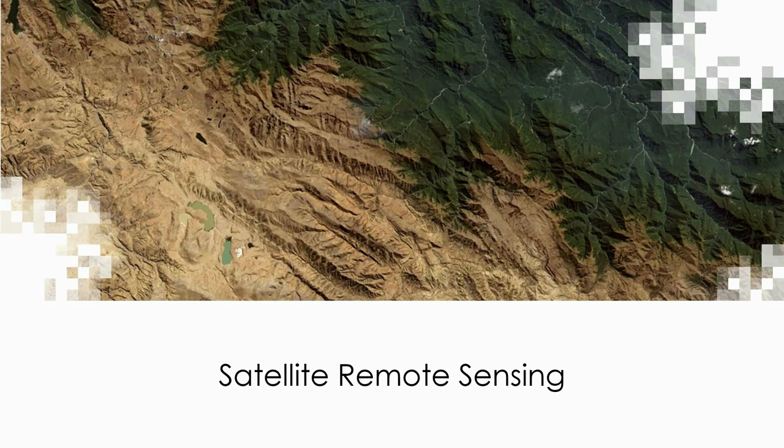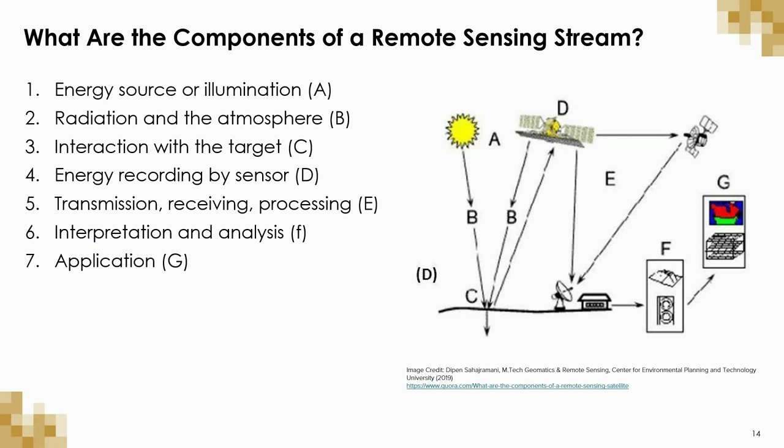Thanks, Jenny. So Jenny presented a number of applications of earth observations and remote sensing, and now we can begin delving into what remote sensing is and how it actually works. We will start by introducing one of the most common types of remote sensing — remote sensing using satellites. Satellite remote sensing is the acquisition of information about an object, landscape, or the earth using satellites in orbit around the planet. There are a number of important steps or components that make up a remote sensing stream: energy source or illumination, radiation and the atmosphere, interaction with the actual target object or surface, energy recording by the satellite sensor, transmission, receiving and processing the information, interpretation and analysis, and finally the application of the data gathered.